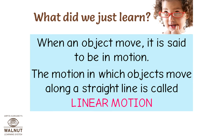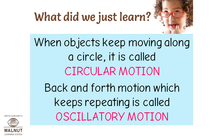When an object moves, it is said to be in motion. The motion in which objects move along a straight line is called linear motion. When objects keep moving along a circle, it is called circular motion. Back-and-forth motion which keeps repeating is called oscillatory motion.